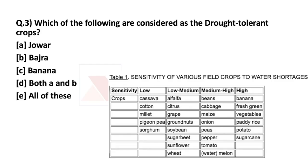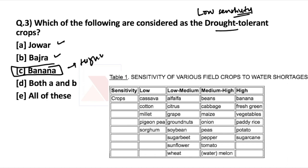The next question: which of the following are considered as drought tolerant crops? Drought tolerant crops are not sensitive or have low sensitivity to drought, meaning their water requirement is comparatively less than other crops. Jowar and Bajra are both considered drought tolerant crops. Banana, however, is highly sensitive to drought. In terms of low sensitivity — drought tolerant crops — cassava, cotton, millet, pigeon pea, and sorghum qualify. Highly sensitive crops include banana, fresh greens, paddy rice, potato, and sugarcane.